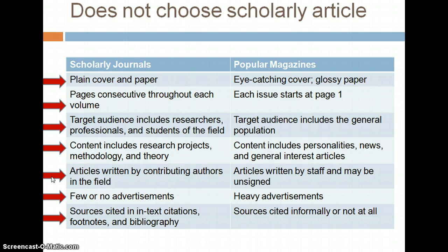Content in scholarly articles includes research projects, methodology, studies, and theories within the field, whereas popular magazines tend to cover personalities, news, and general interest articles. Scholarly articles are always written by contributing editors who are experts in the specific field, whereas articles in a popular magazine are mostly written by staff writers who are not necessarily experts. A lot of times these popular magazine articles might not even have an author signed.